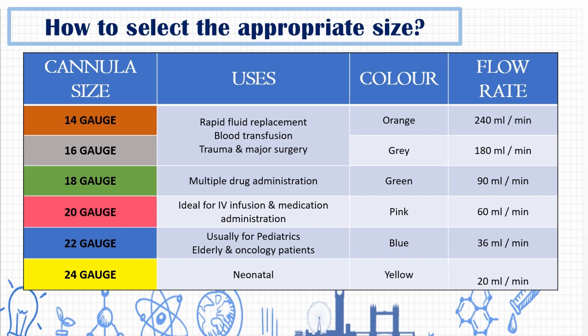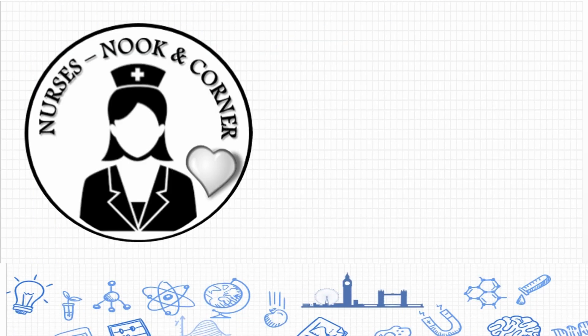The 20 gauge is ideally used for IV infusion and medications of very low concentration. The 20 and 22 gauge are used for adult patients such as geriatrics and oncology patients, and for dehydration. The 22 gauge is sometimes used for pediatric patients, where flow rate is minimal and rapid fluid replacement is difficult. The 24 gauge, the smallest needle size, is used for neonates with a flow rate of 20 ml per minute.